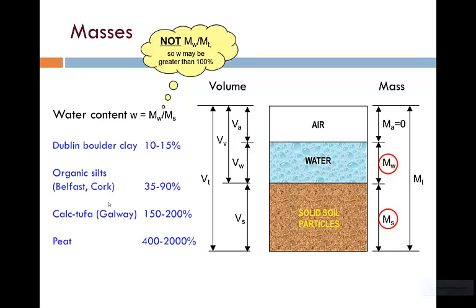Some typical values of water content are given. Dublin boulder clay, 10-15%, which is low. Organic silts, such as those found in Belfast and Cork, 35-90%. Calctuffa, which is a calcareous material found in Galway, 150-200%. And peat, typically 400-2,000%. 2000% means that for every 1 gram of solids you have, there is 20 grams of water.